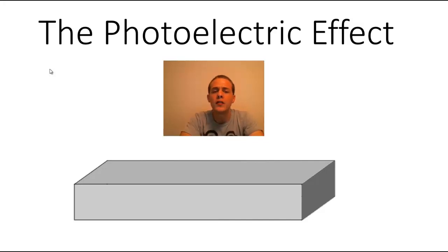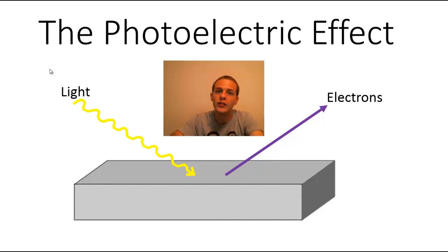Well it's actually pretty simple. Sometimes when you shine light on the surface of a metal, so this block here is just a metal, when you shine light on this metal surface, in some cases the metal can release electrons. So sometimes the light has enough energy to dislodge electrons from the metal.